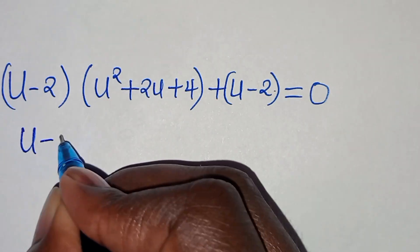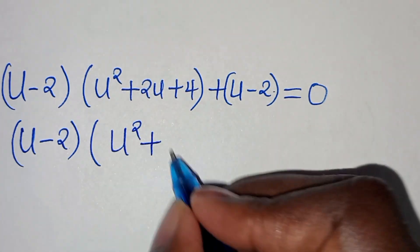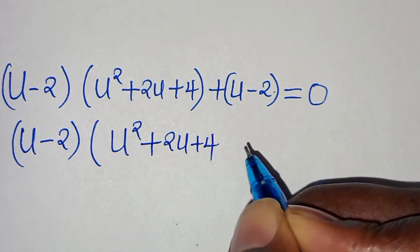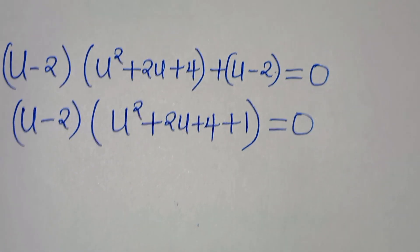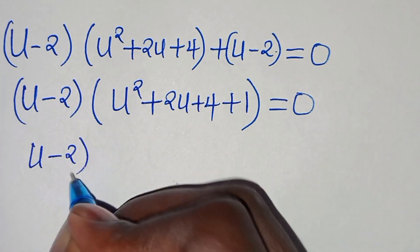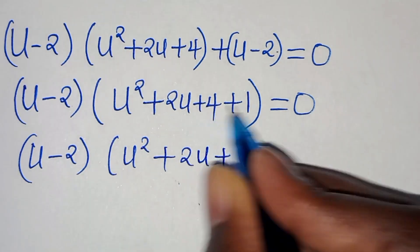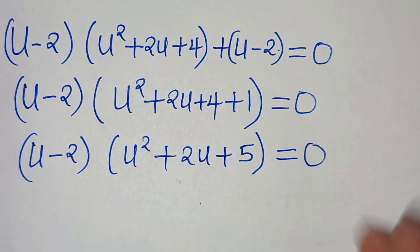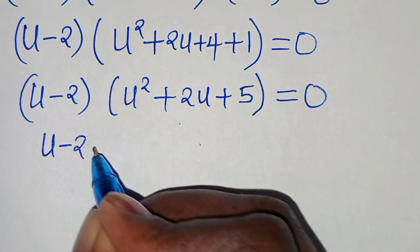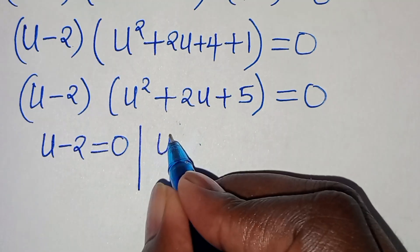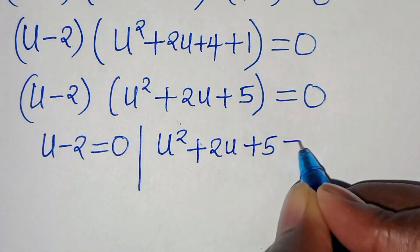Since (u minus 2) is common, we factor it out to get (u minus 2)(u² plus 2u plus 4 plus 1) equals 0, which simplifies to (u minus 2)(u² plus 2u plus 5) equals 0.